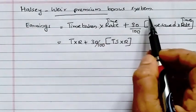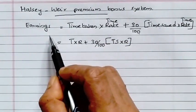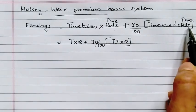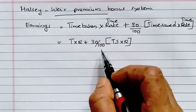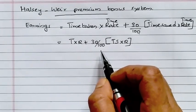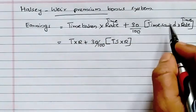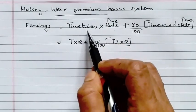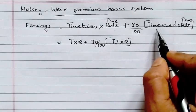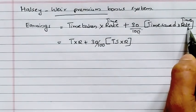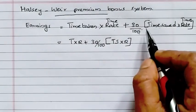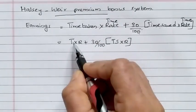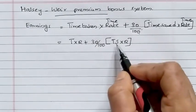The next plan is the Halsey Weir Premium Bonus System. Under this plan, earnings are calculated as: Earnings = Time Taken × Time Rate + (30/100) × Time Saved × Time Rate. In the Halsey Plan, 50% bonus is provided, but in the Halsey Weir Premium Bonus System, only 30% is provided to the workers. In short form: Earnings = T × R + (30/100) × Ts × R, where T is time taken, R is time rate, and Ts is time saved.